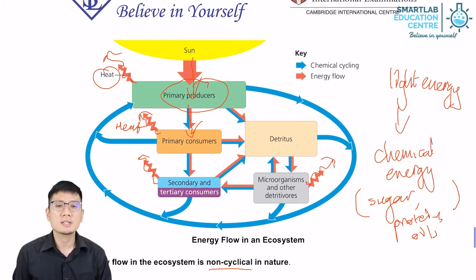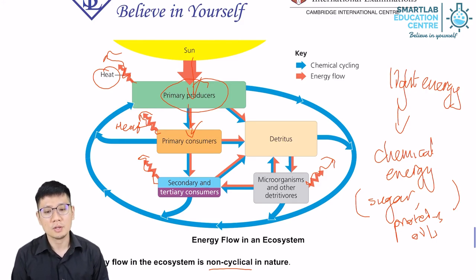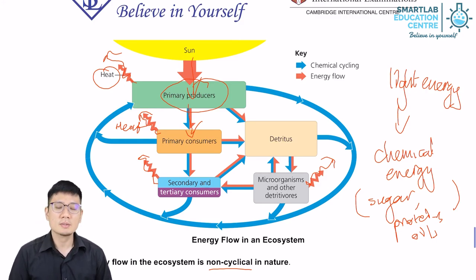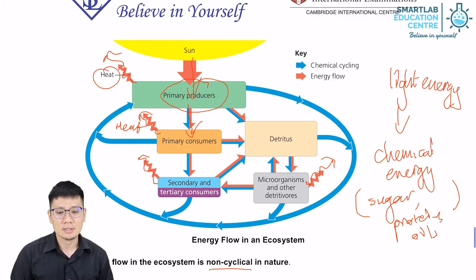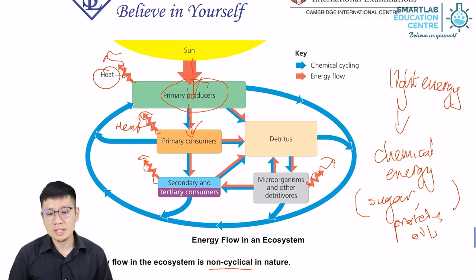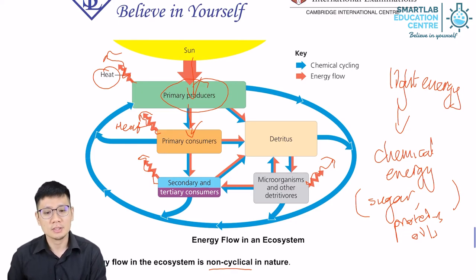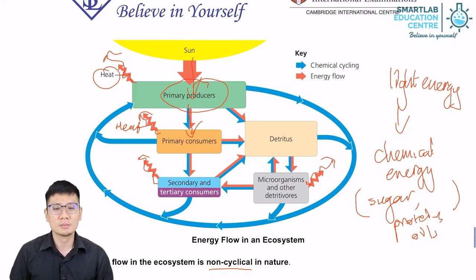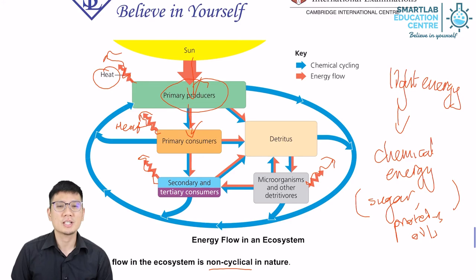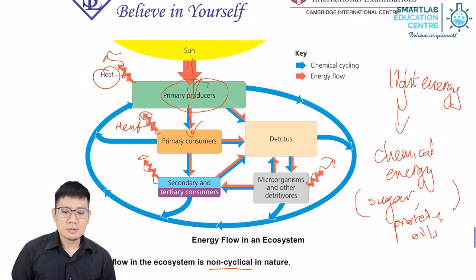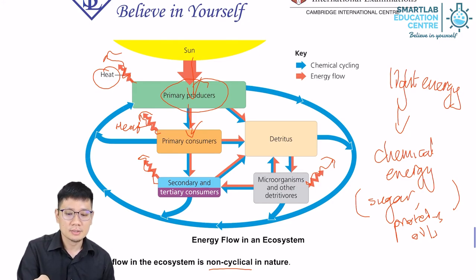For every organism, there is some loss of energy in the form of heat. Heat energy is very chaotic — it can't be reused. Once lost as heat, it will not easily be converted into any other form of energy. Because of this, energy flow is non-cyclical in nature.